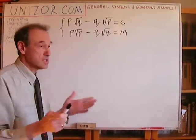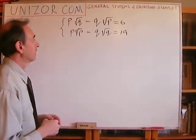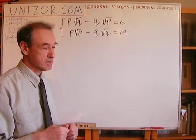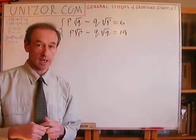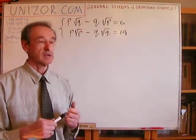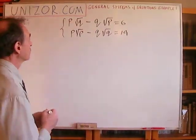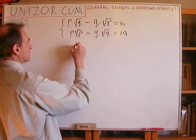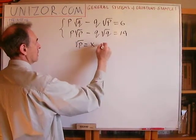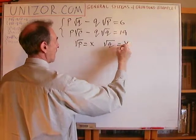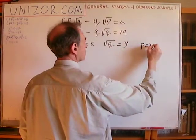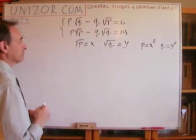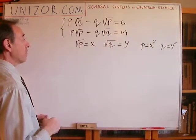As you see, it's a completely different type of system of equations. What can be done in this particular case? Nobody likes radicals — nobody likes square roots or any kind of roots. The first thing that comes to mind is to make a substitution. What kind of substitution? Well, obviously, let square root of P be X and square root of Q be Y, in which case P equals X squared and Q equals Y squared.